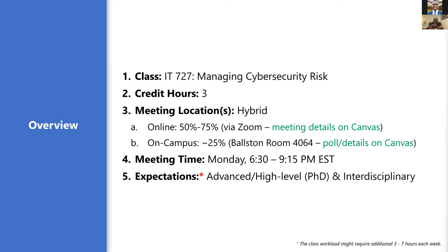There are a lot of resources, and since the program is still relatively new at Marymount, you will still come across things that are yet to be fleshed out. At least in this class, we will work with you to support that. This is a three-hour credit class. I know the class says IT727A — normally the A designation is for in-person, but the class is going to run as hybrid.